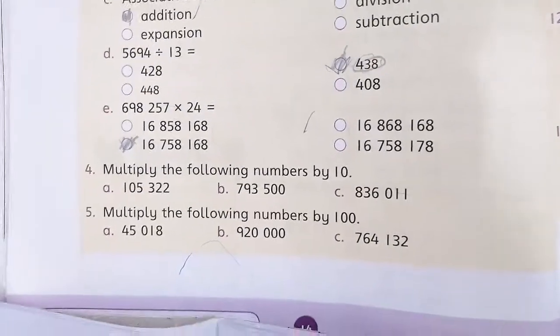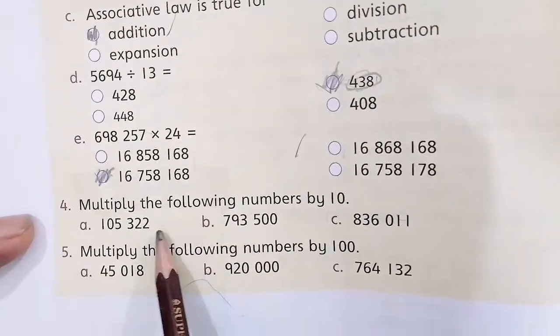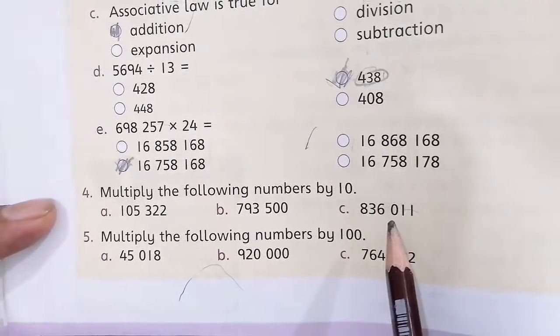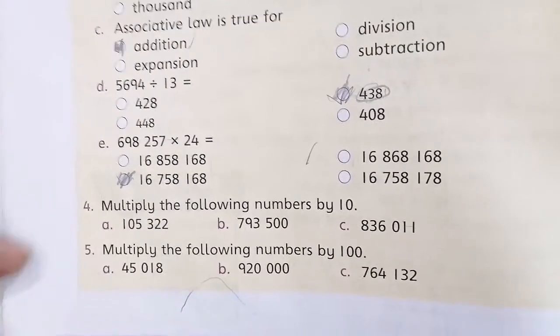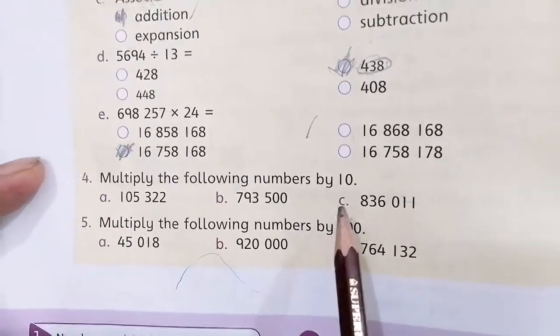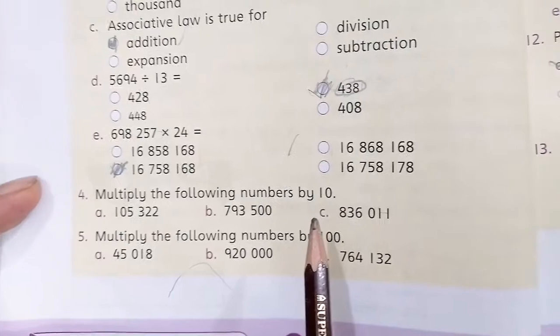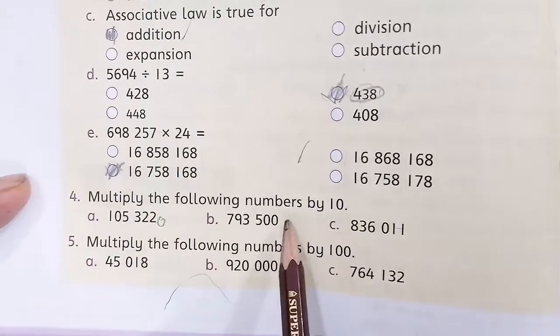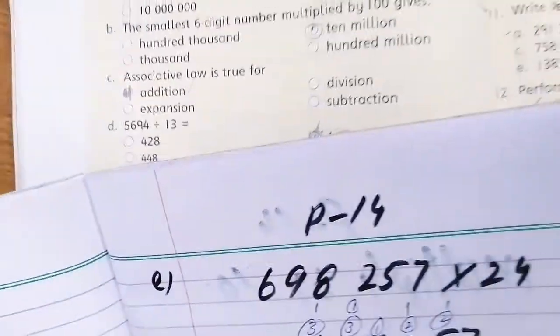Then multiply the following by 10. If you multiply 10 with any number, you will multiply 10 with a column. I have told you in the previous video that 10, 100, 1000, so columns are added.